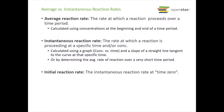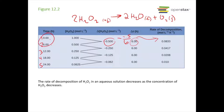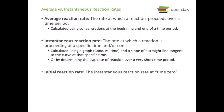These calculated points are called average reaction rates — the rate at which a reaction proceeds over a time period. Here, each measurement covered a six-hour period, so these are average reaction rates for each six-hour interval. We also have instantaneous reaction rates, which is the reaction rate at a specific time or concentration. To find it, you use a graph with concentration on the y-axis and time on the x-axis.